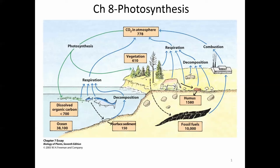If a plant happens to die before its carbon is released back into the atmosphere, its carbon may, over time, become fossil fuel. Humans can then burn that for energy purposes and release CO2 into the atmosphere as well. Two of the major components of this cycle are respiration and photosynthesis — applications of these cellular processes at the ecological level.